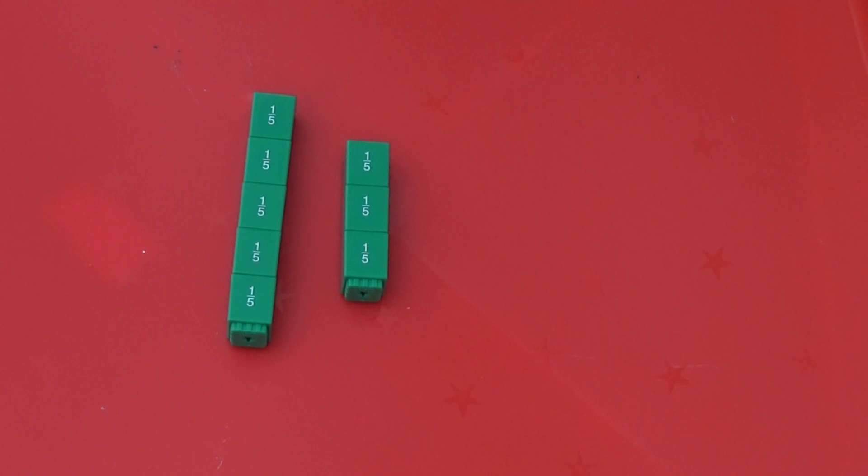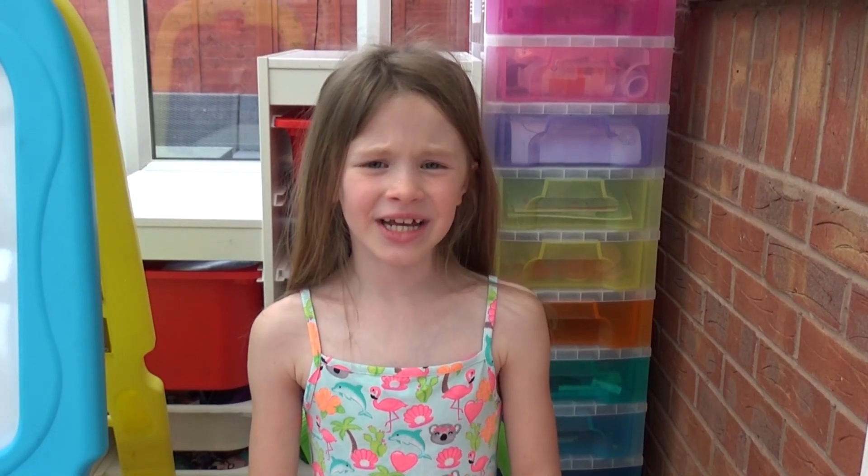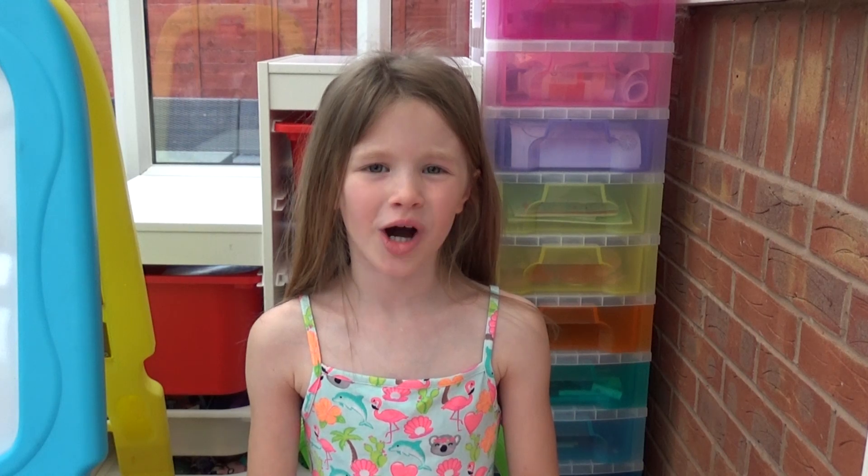We have 3 cubes left meaning we have 1 whole and 3 fifths. We can show this as a diagram using a part-whole model. Here we can see that there are 8 fifths altogether. So 8 fifths equals 1 whole and 3 fifths. We are going to look at another fraction greater than 1.